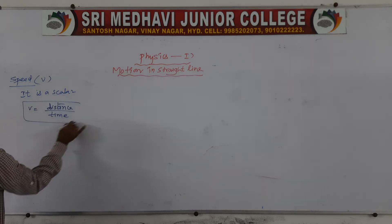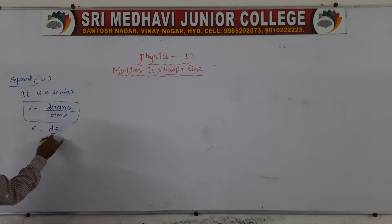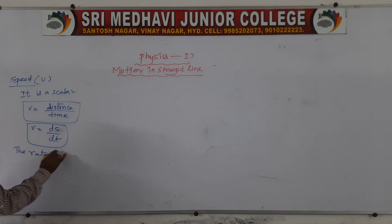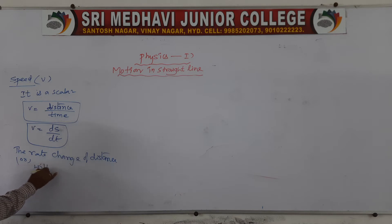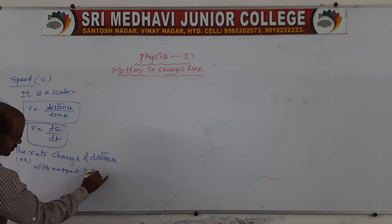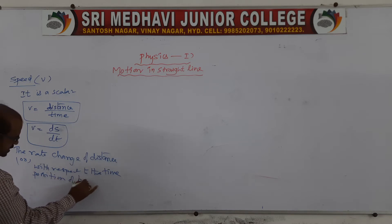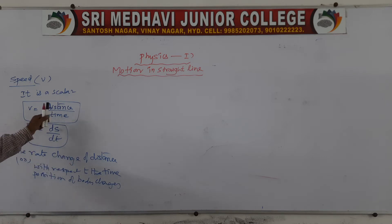Since distance is a scalar, speed is also a scalar. With respect to time, as distance changes, that rate we call speed. So v = ds/dt — the rate of change of distance with respect to time. The position of the particle changes with respect to time, which we call speed. Distance is scalar, time is scalar, so speed is scalar.